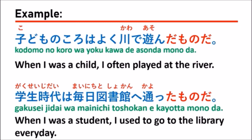For the second sentence: 学生時代は毎日図書館へ通ったものだ. Here, the verb used is 通う, which means 'to go somewhere.' When you change it to the past tense, it becomes 通った. Followed by ものだ, it becomes 通ったものだ, which means 'I used to go to the library every day when I was a student.'